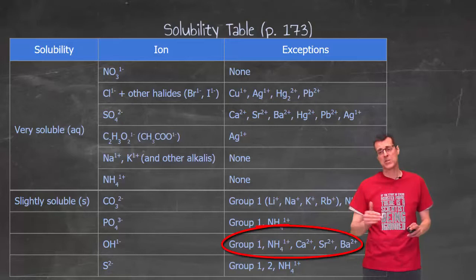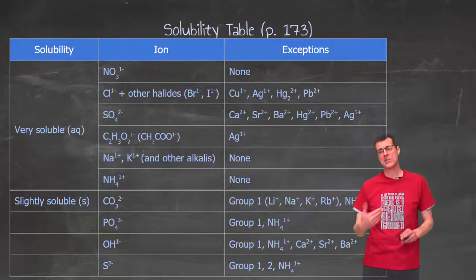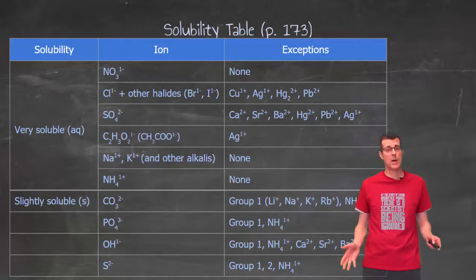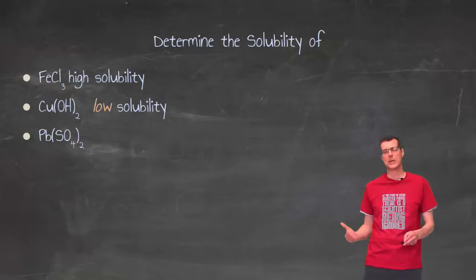in that row. I don't see it. I see group 1, NH4, calcium, strontium, barium. I don't see copper, which means copper follows the main pattern of being slightly soluble. I've labeled it as low solubility.